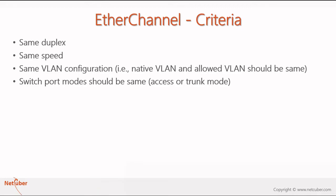There are criteria required to form an EtherChannel. The ports on both switches must match on duplex, speed, and VLAN configuration. If it is an access port, both sides must have the same access VLAN; if it is a trunk port, both sides must have the same allowed VLANs. The switchport mode must also be the same — you cannot configure one side as access and the other as trunk.